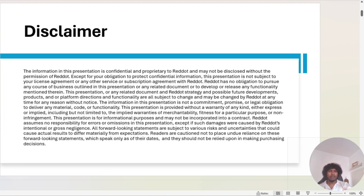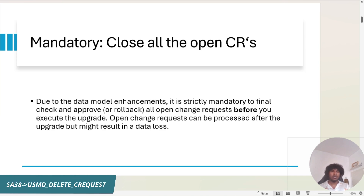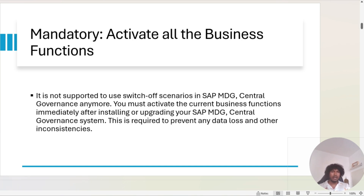The first important thing is we have to close all the open CRs — it is mandatory. If you have open CRs you have to process them all, or finally reject them all, or delete them using the report USMD_DELETE_C_REQUEST. The second thing is to activate all the business functions.